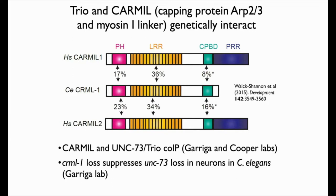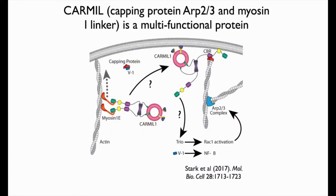CARMIL proteins are interesting, multifunctional scaffolding proteins. One of the things they do is bind capping protein. Capping proteins bind the barbed or plus ends of actin filaments, stabilizing them against both subunit loss and subunit addition. In particular, capping proteins stabilize the tips of networks of actin that polymerize via ARP2-3-mediated branching. So presumably CARMILs are affecting actin polymerization kinetics or dynamics.